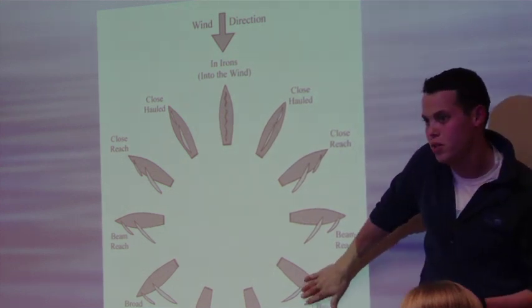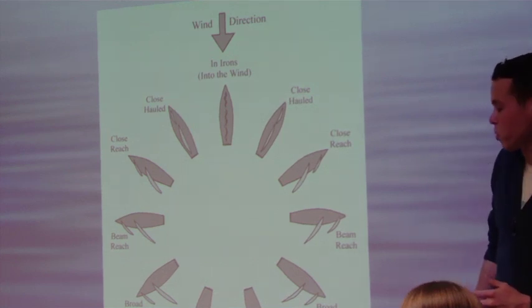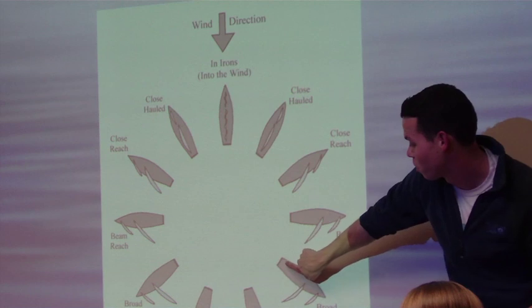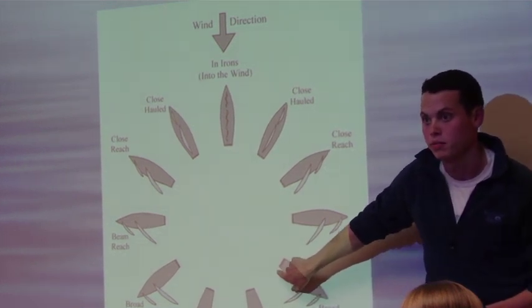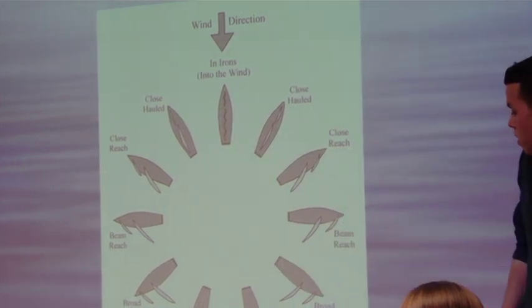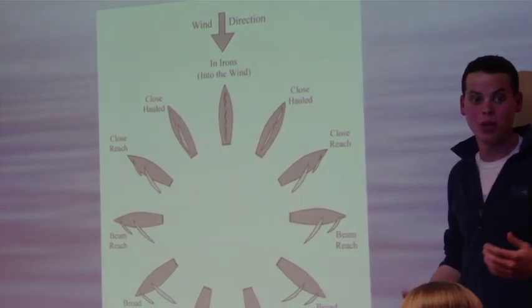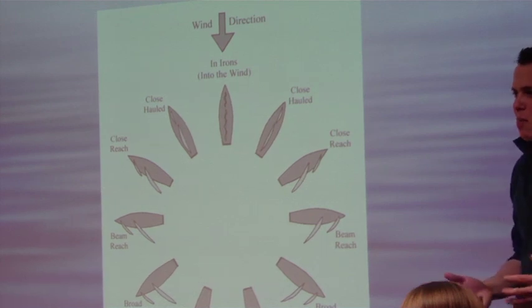Next, we're going to be on a broad reach. So a broad reach is when the wind is hitting the aft quarter. So you see the wind is hitting basically this corner of the boat there. Everybody see that? So at this position, we're going to want to let our sails out even further. And so you're going to want to think about it as having our sails out about 75%.